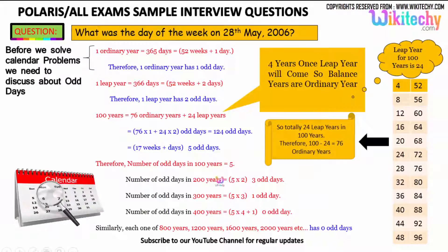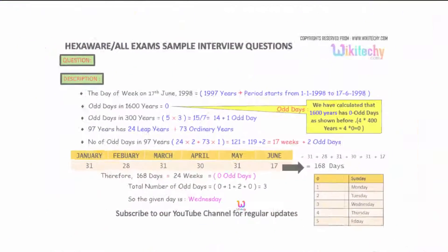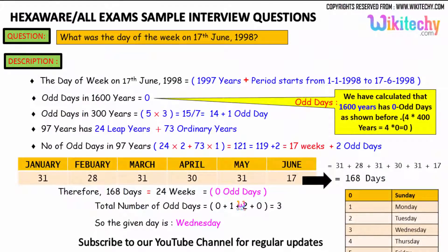You can see that gives 1 odd day. For the remaining 97 years (1901–1997), we have 24 leap years and 73 ordinary years. Number of odd days in 97 years: 24 × 2 plus 73 × 1 = 48 + 73 = 121. That is 119 + 2, which is 17 weeks and 2 odd days. So 97 years gives 2 odd days.